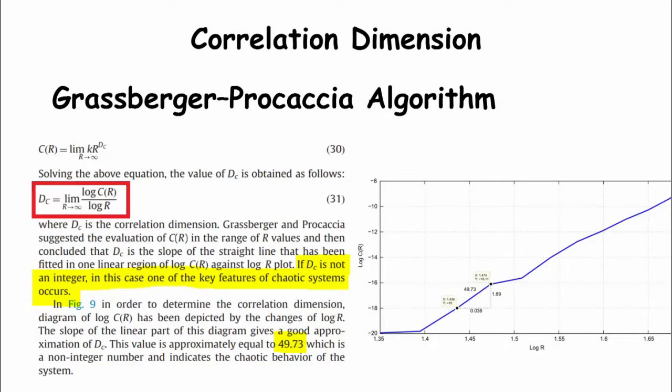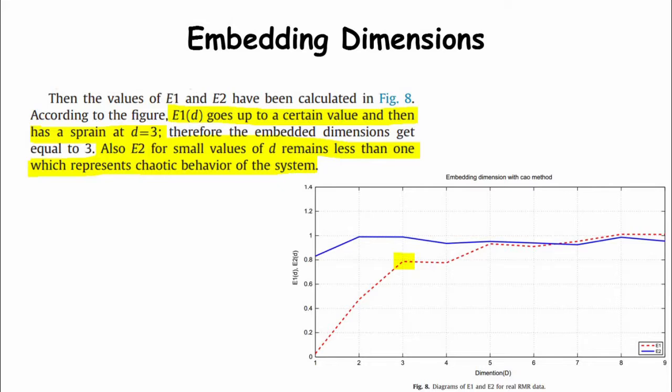Fractals can be used to widely describe chaotic phenomena. A basic feature in describing a fractal pattern is its dimension d. In Euclidean geometry, objects are not fractal but have integer dimensions. In a fractal pattern, the repeating structure causes a non-integer dimension. During the recent 50 years, many algorithms were presented for calculating the fractal dimension; among these, the correlation dimension is most applicable. In this study, if the correlation dimension DC is not an integer, one of the key features of a chaotic system is confirmed. In systems with random behavior, E2 for all data remains close to 1, while in a chaotic system this value for small d is less than 1.